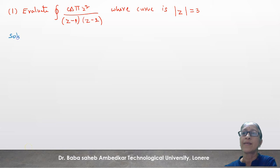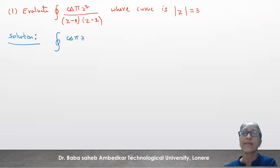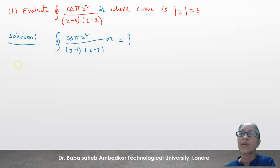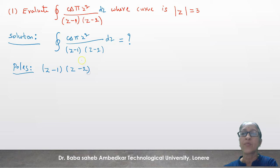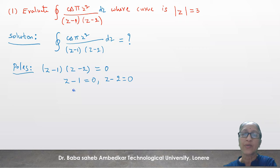In this solution, the first step is finding poles. Write the given integral: contour integral of cos(πz²) upon (z−1)(z−2) dz. In the second step, we find poles by equating the denominator to 0. The denominator is (z−1)(z−2), so equating it to 0 gives z−1 = 0 and z−2 = 0, therefore z = 1 and z = 2 are poles.